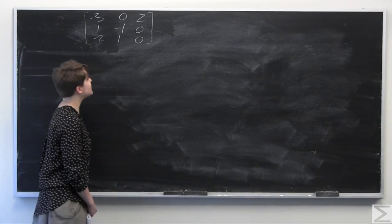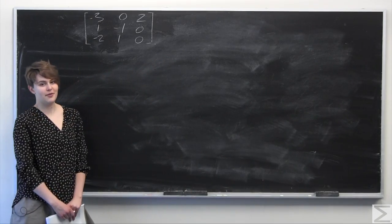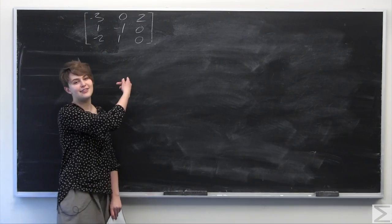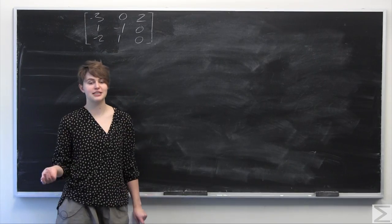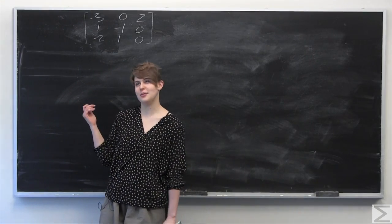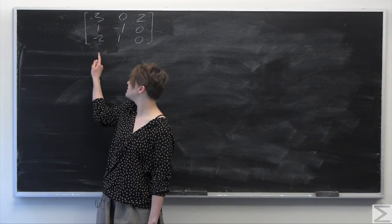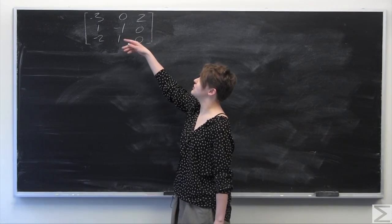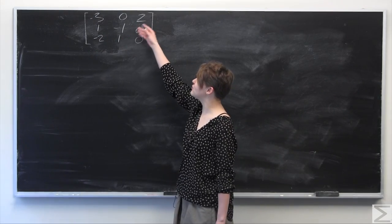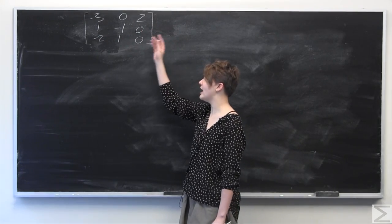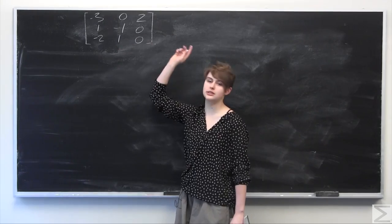This week's Advanced Knowledge Problem of the Week asks you to calculate the eigenvalues and their respective algebraic multiplicities of the given matrix, which is: 3, negative 3, 0, 2, 1, negative 1, 0, negative 2, 1, 0.